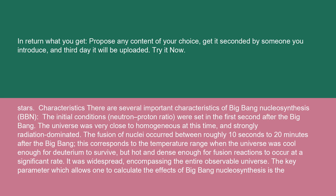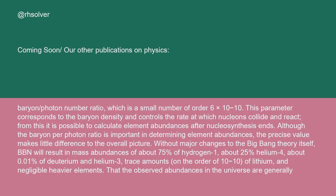Characteristics: There are several important characteristics of Big Bang nucleosynthesis (BBN). The initial conditions, neutron-proton ratio, were set in the first second after the Big Bang. The universe was very close to homogeneous at this time and strongly radiation-dominated. The fusion of nuclei occurred between roughly 10 seconds to 20 minutes after the Big Bang. This corresponds to the temperature range when the universe was cool enough for deuterium to survive, but hot and dense enough for fusion reactions to occur at a significant rate. It was widespread, encompassing the entire observable universe. The key parameter which allows one to calculate the effects of Big Bang nucleosynthesis is the baryon-slash-photon number ratio, which is a small number of order 6 times 10^-10. This parameter corresponds to the baryon density and controls the rate at which nucleons collide and react. From this, it is possible to calculate element abundances after nucleosynthesis ends.